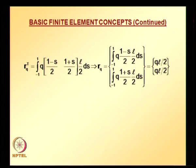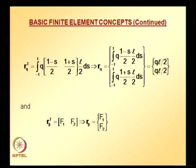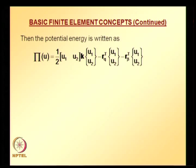The vector R_q is defined from the distributed load term. After integration, R_q = [qL/2, qL/2]^T. The last two terms involve F1*u1 and F2*u2, giving the nodal force vector R_beta = [F1, F2]^T. Once k, R_q, and R_beta are defined, the potential energy can be written in compact form. The stationarity conditions — partial derivative of pi with respect to u1 = 0 and with respect to u2 = 0 — give two equations.